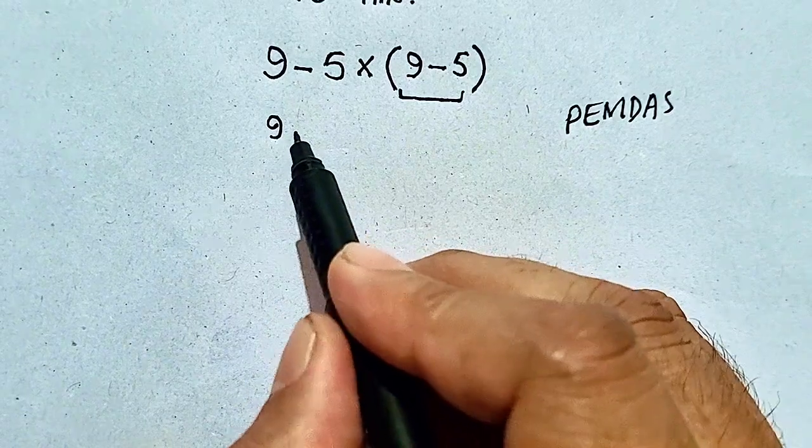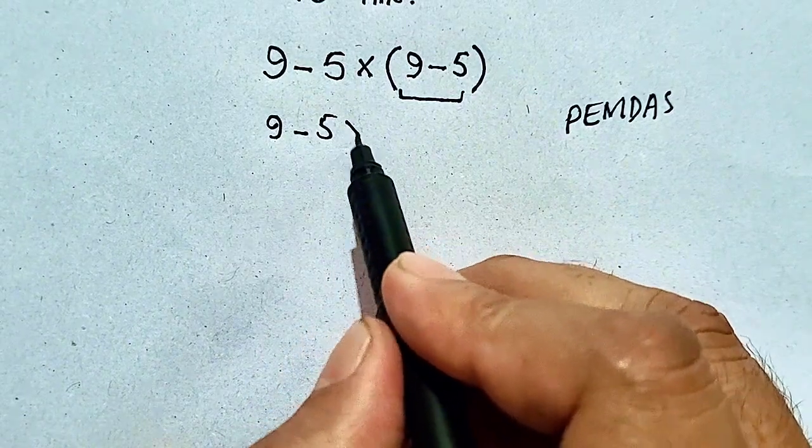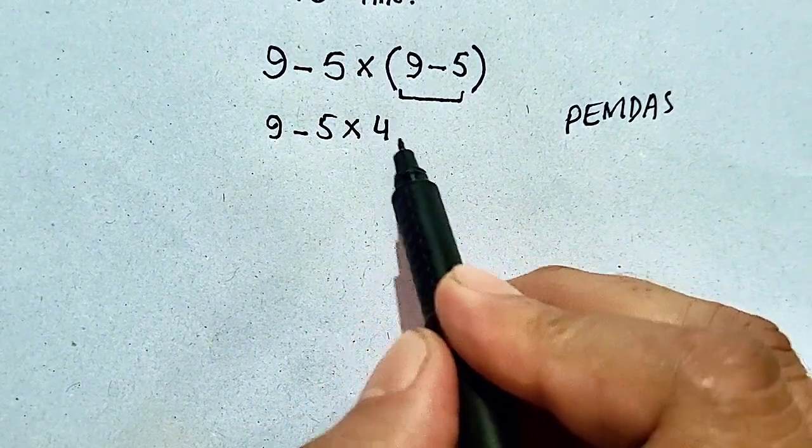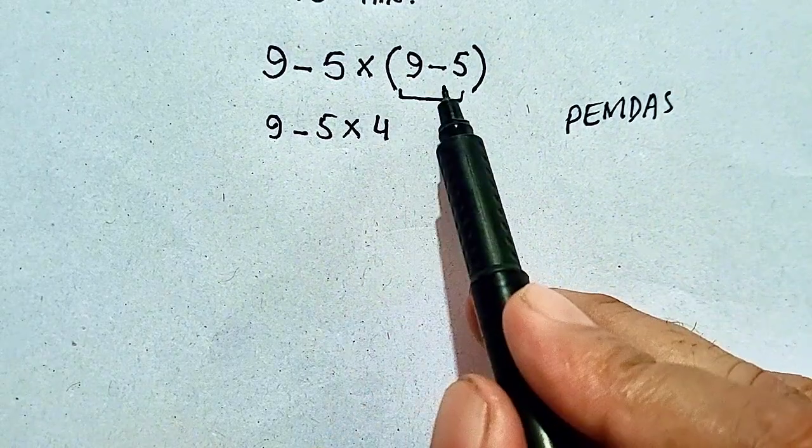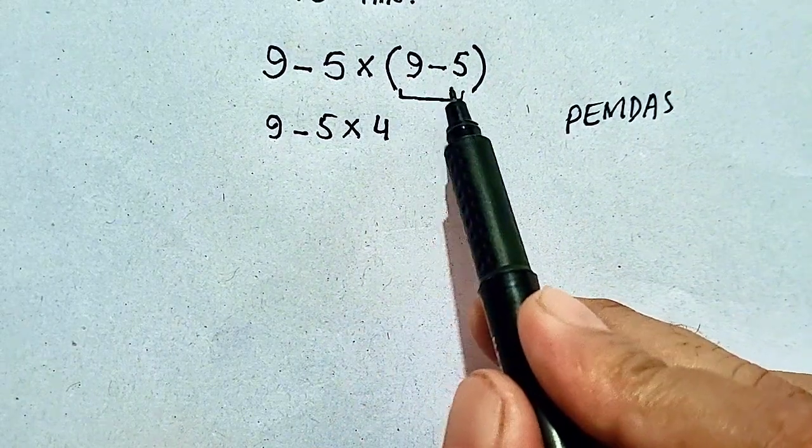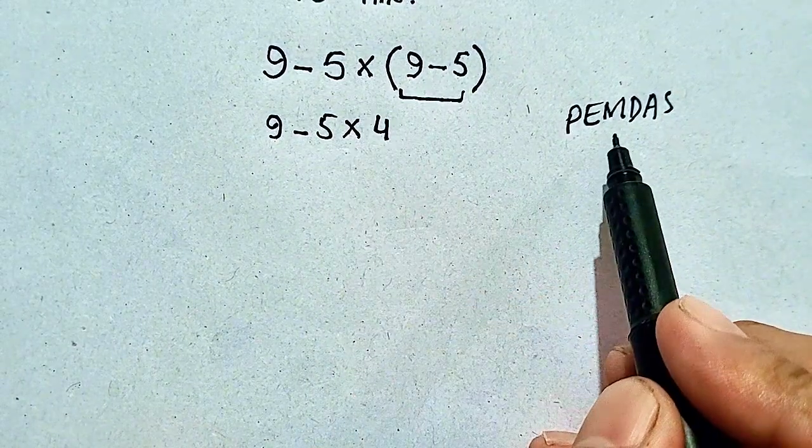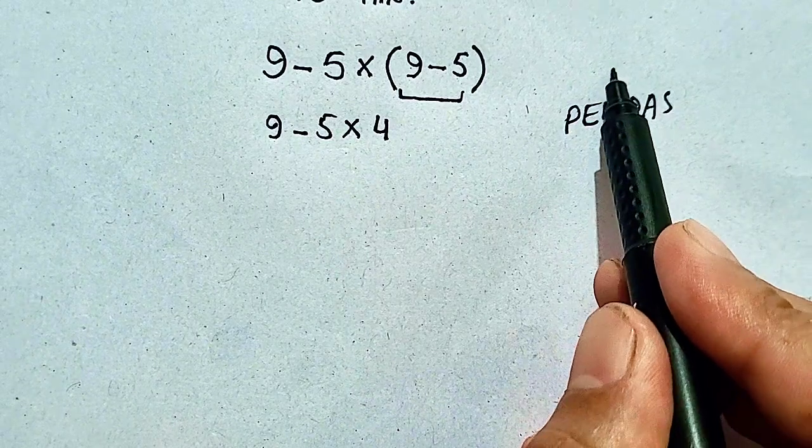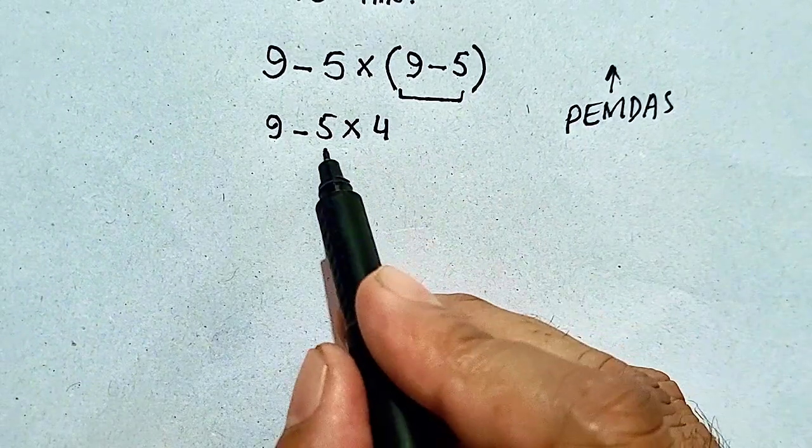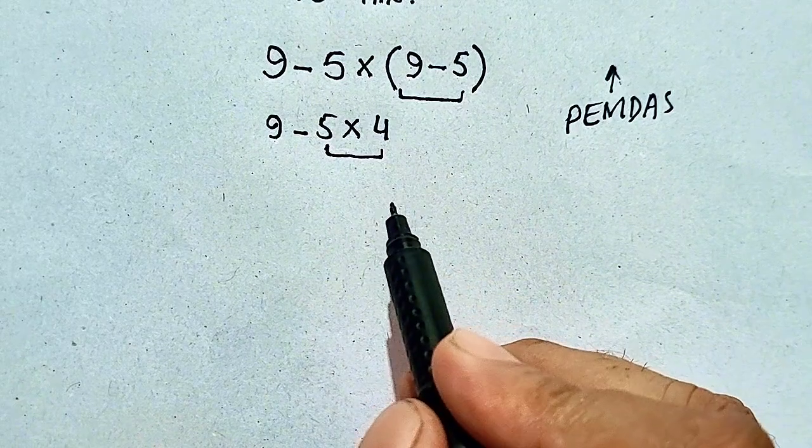So 9 minus 5 times 9 minus 5 is equal to 4. Parentheses has been solved first. Now, according to PEMDAS rule, we have to solve multiplication. So we have to solve 5 times 4.